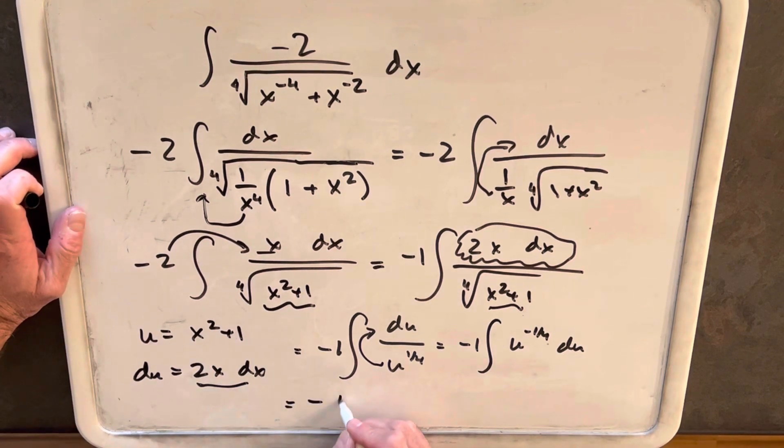Integrating with the power rule, we'll have minus u to the 3/4 times 4/3 plus c.